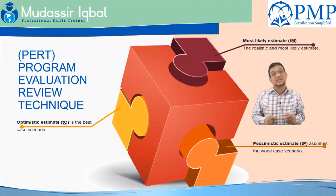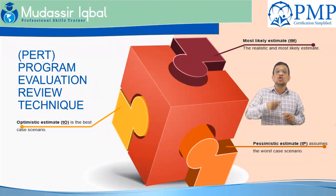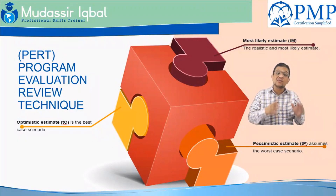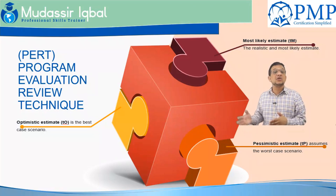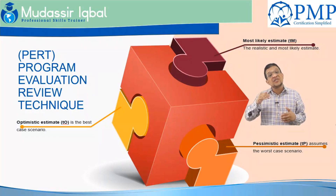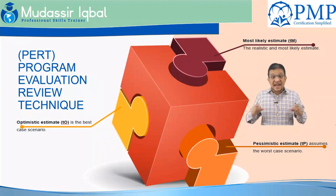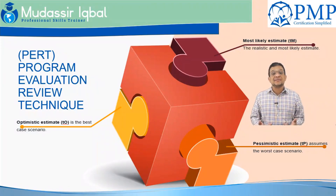That worst-case scenario is your Pessimistic approach — what could go wrong. The worst case does not mean if your Most Likely is five, your pessimistic is 50. You need to identify all your assumptions, all the risks and uncertainties that could go wrong on this activity, and from that analysis, your pessimistic estimate is derived.